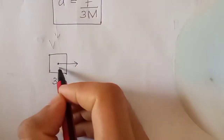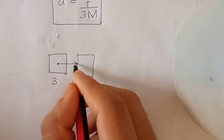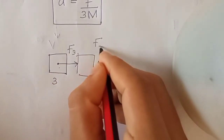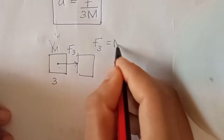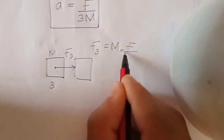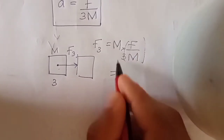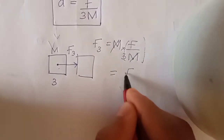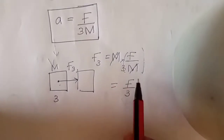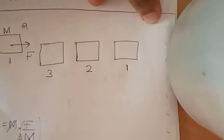For the third compartment, the force between the second and third compartment is F3. Then F3 equals mass times acceleration. The mass terms cancel, giving us F3 — that is the force on the third compartment from the second compartment.